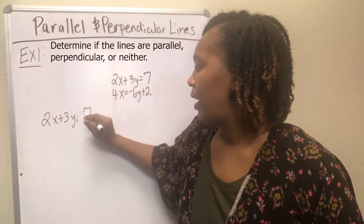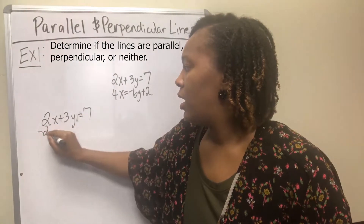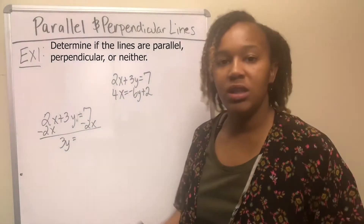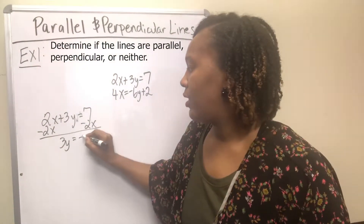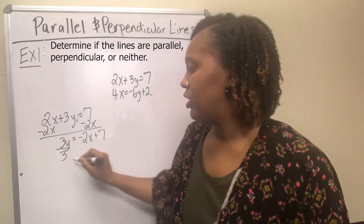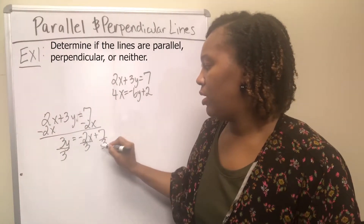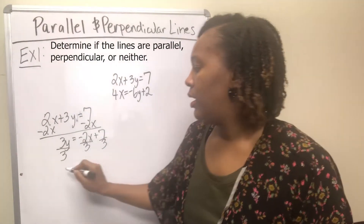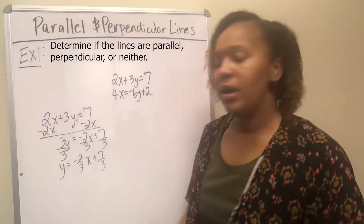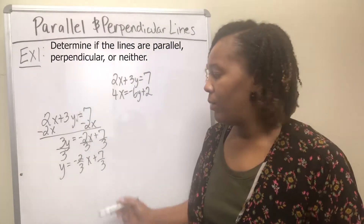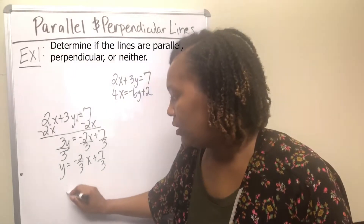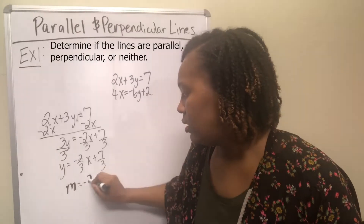For the first equation, to isolate y I need to get rid of the 2x by subtracting 2x from both sides. That gives me 3y = negative 2x + 7. Then I divide everything by 3, which leaves me with y = negative two-thirds x + seven-thirds. The slope is always the number in front of the x, so for this equation the slope is negative two-thirds.